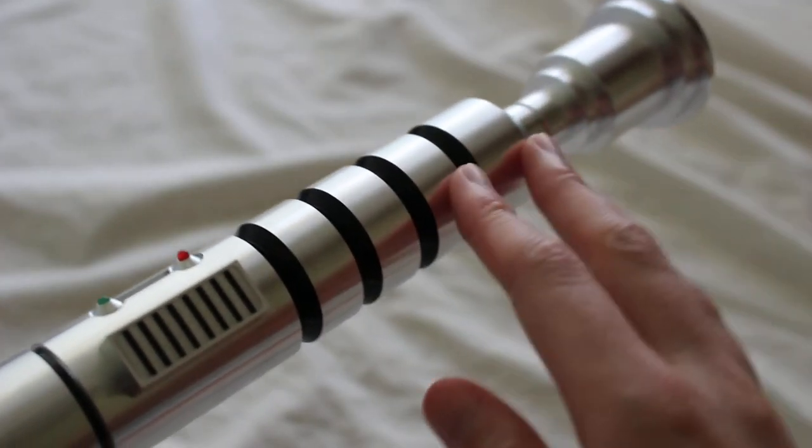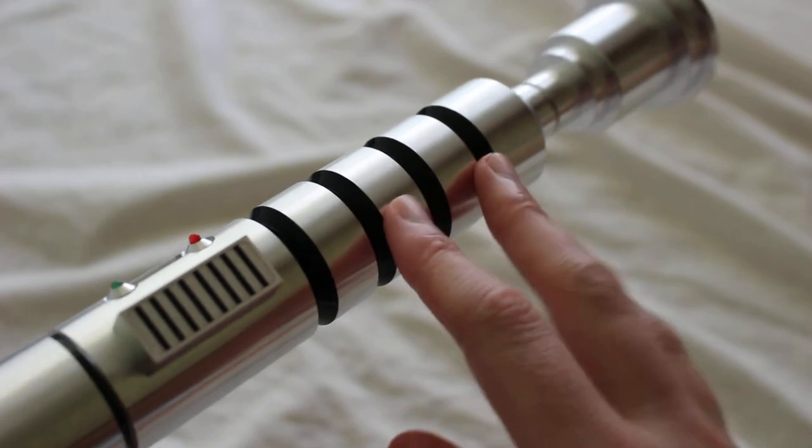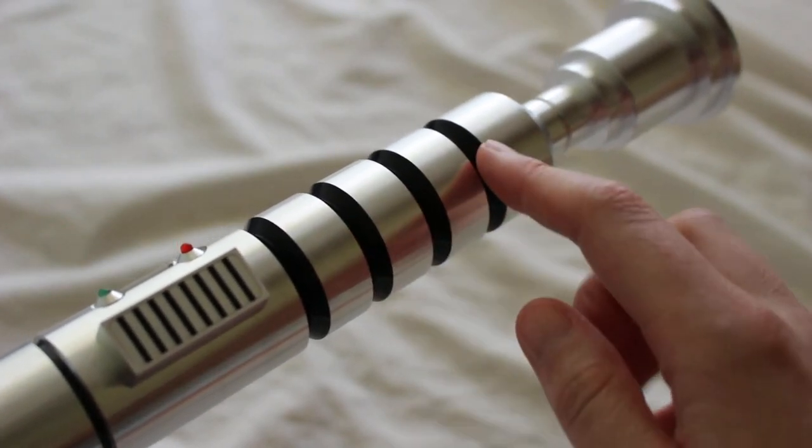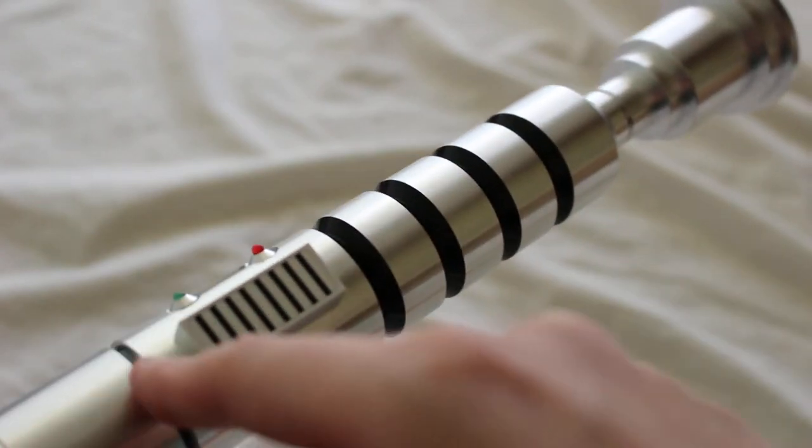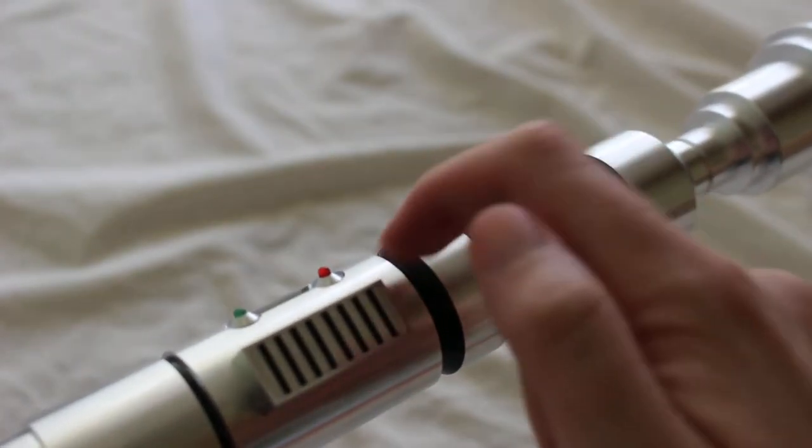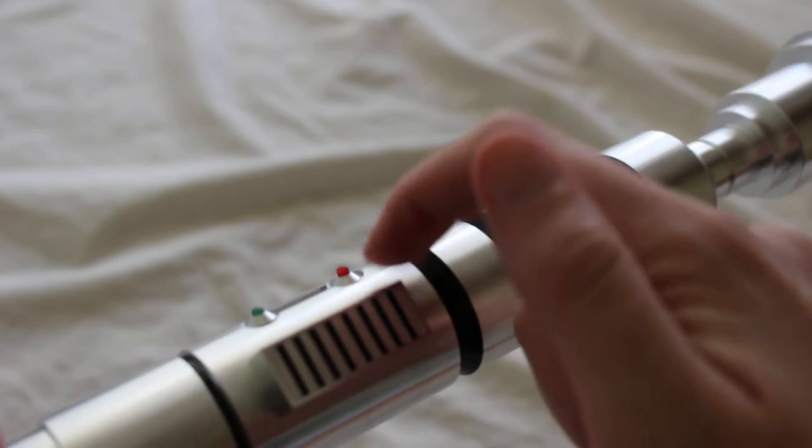It's an aluminum hilt, machined aluminum, mostly metallic silver with some accent colors - a little bit of black in the grip section, in the box, and toward the bottom. And then we have these cool little blinky things, this red one and this green one.